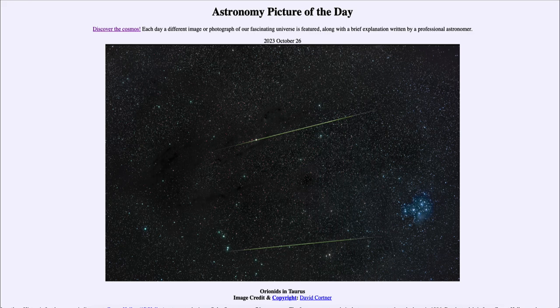Now this is the Orionids which appear to radiate from the constellation of Orion. We're looking in Taurus, which is just next to Orion. And you can almost imagine that if you look at these two meteors, their trails seem to converge to a point off to the left, which would be located in Orion.